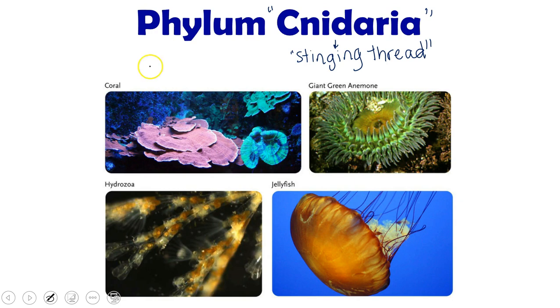And they include things like jellyfish, anemones, and corals. And among these we have about 9,000 different species of cnidarians.